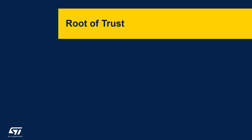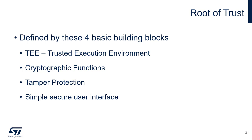It all starts with the root of trust. A root of trust in an embedded system is defined by these four basic building blocks: a TEE, which is your trusted execution environment, cryptographic functions, tamper protection, and a simple secure user interface.